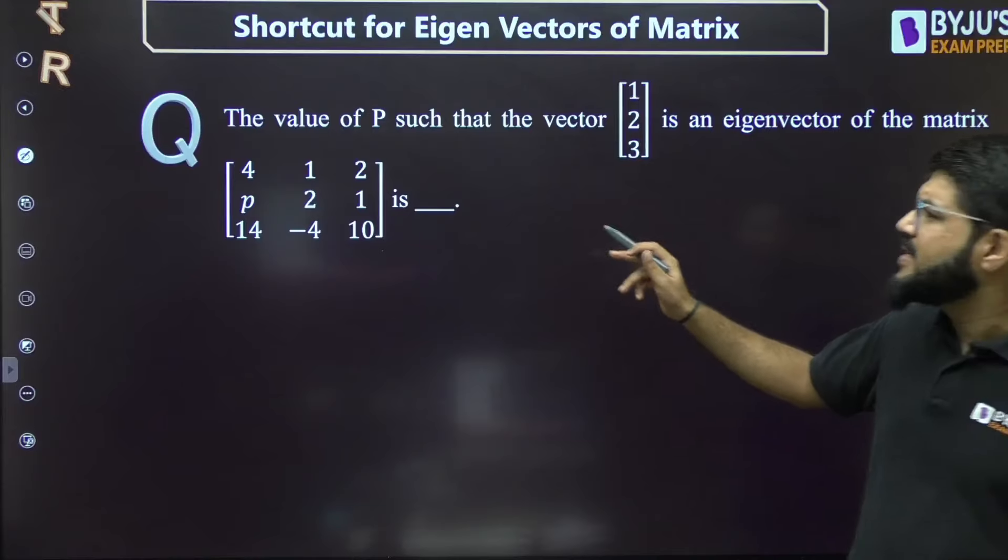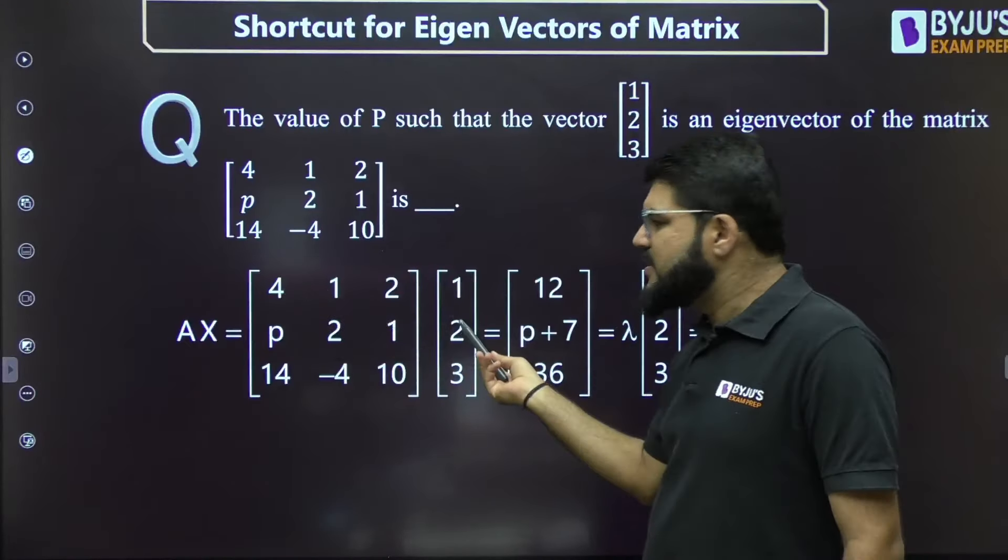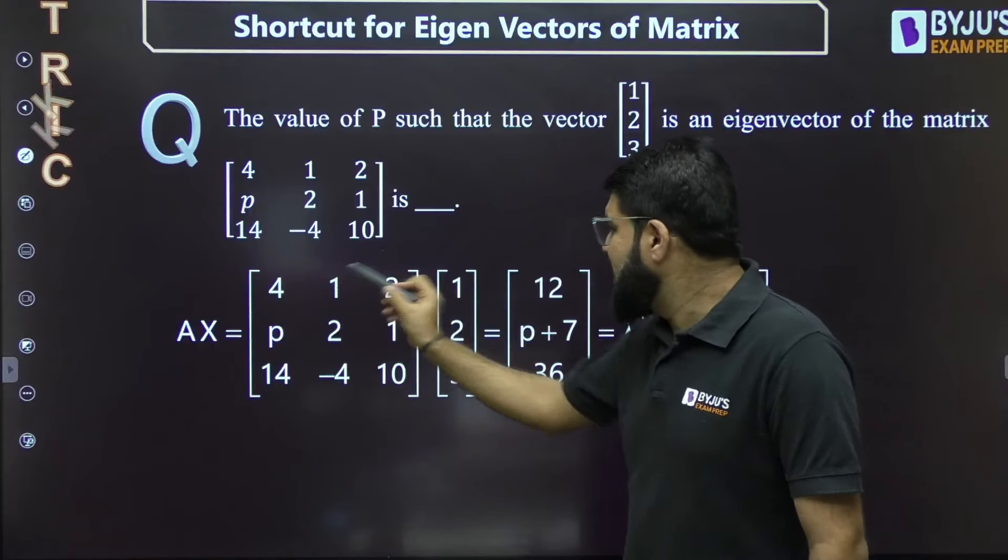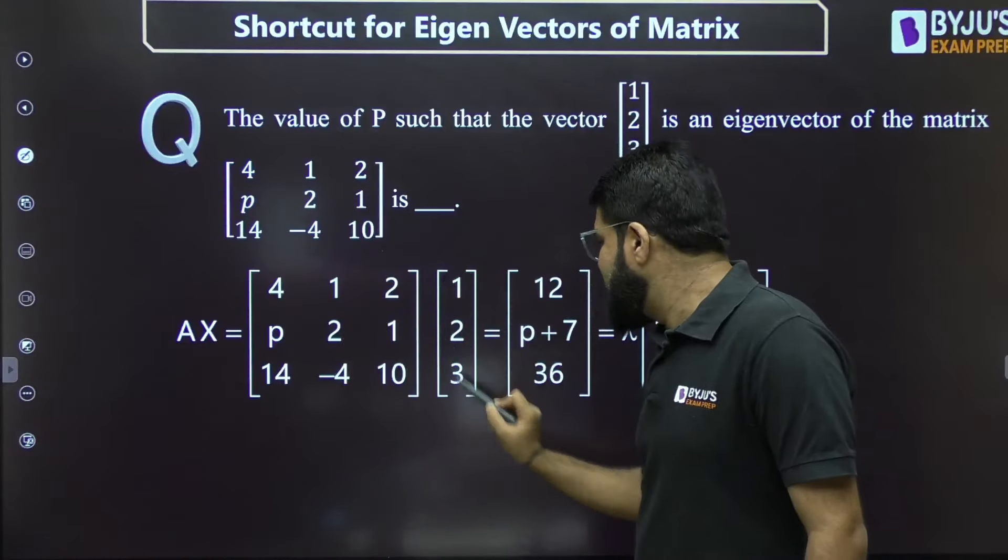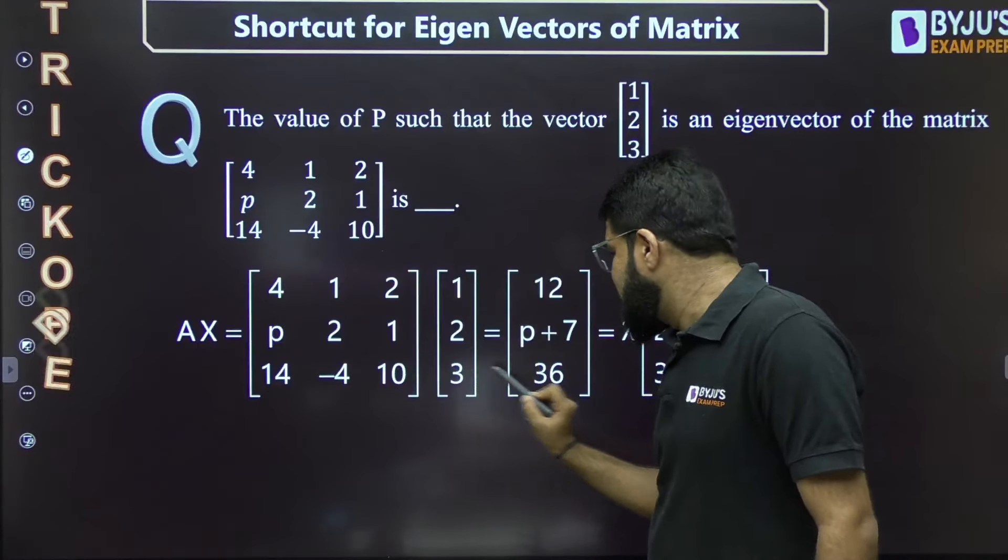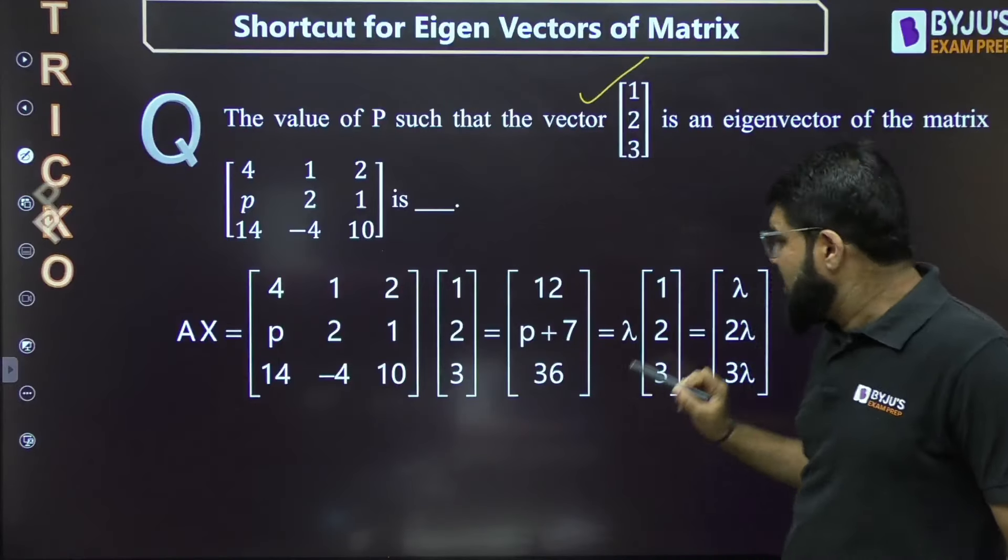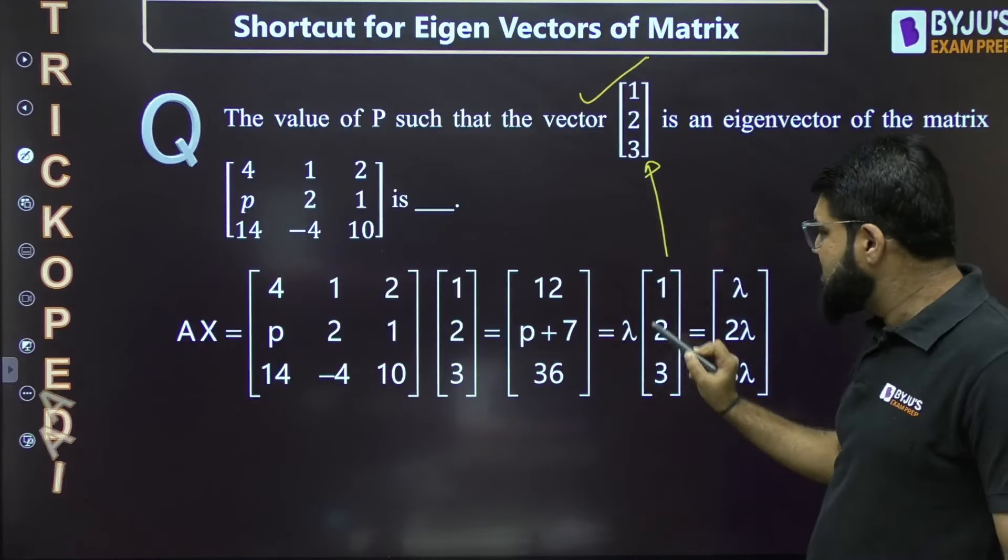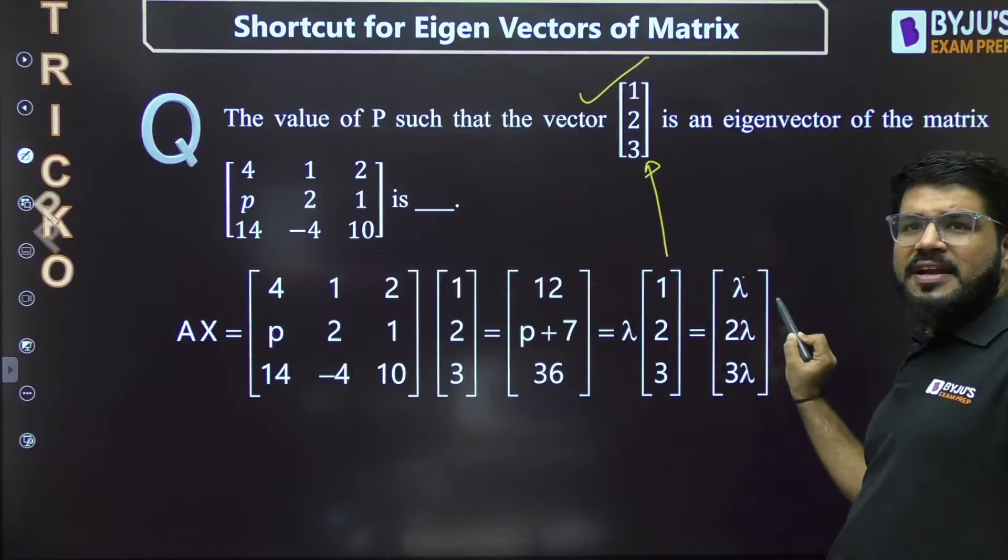Find the value of p such that the given vector is an eigenvector. I'll start with Ax. If I multiply, I get 12, p+7, and 36. This should equal λx. So λ into the given vector x: 2λ, 2λ, 3λ. Left-hand side equal to right-hand side means all corresponding elements are equal.